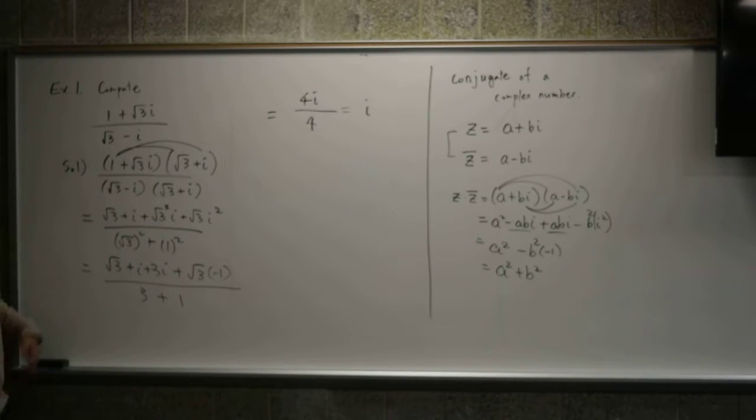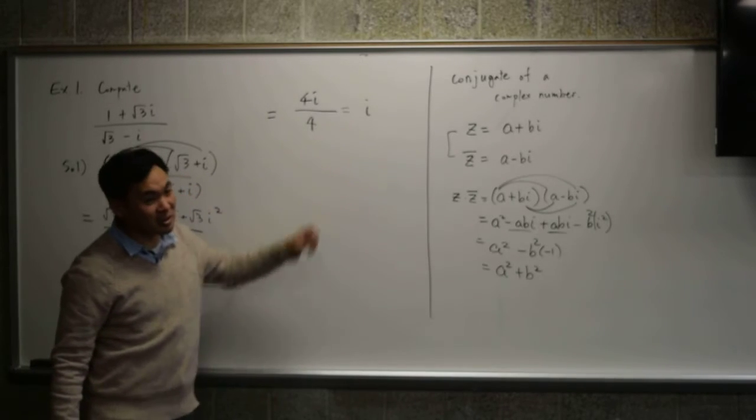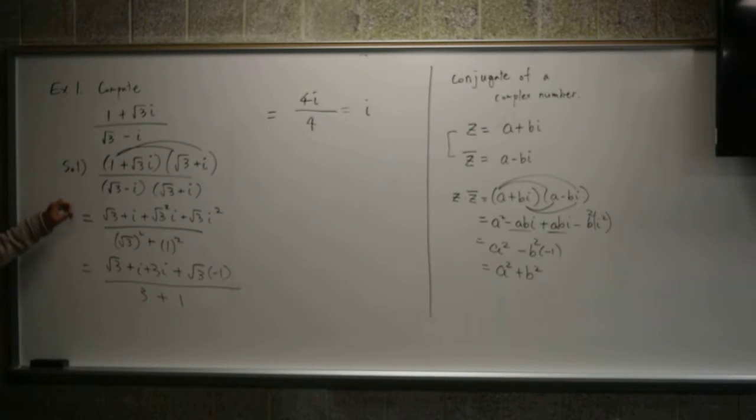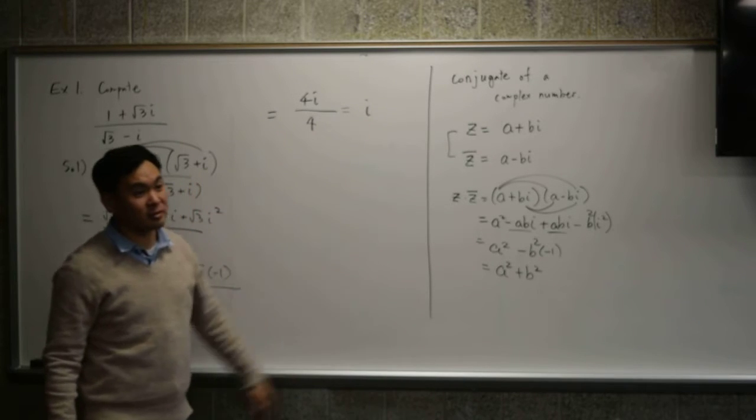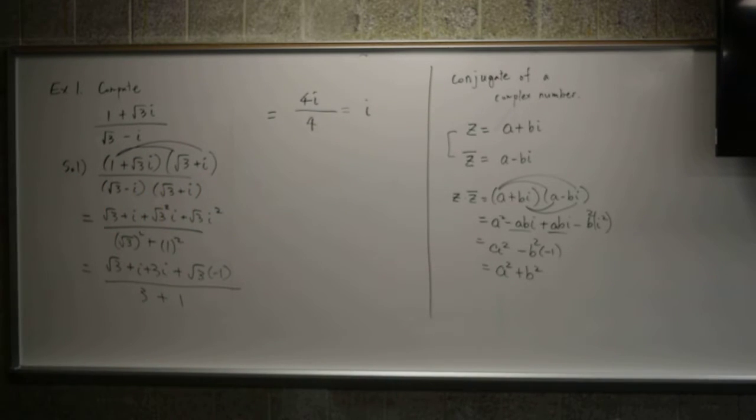So we see that if you divide this number by that number, you get the number i. It looks kind of magical, right? I mean, how would you have suspected that this would be simplified to such a simple number? But with the help of the conjugate, complex conjugate, you've greatly simplified your outcome and you get a simple answer. So that's how you divide.